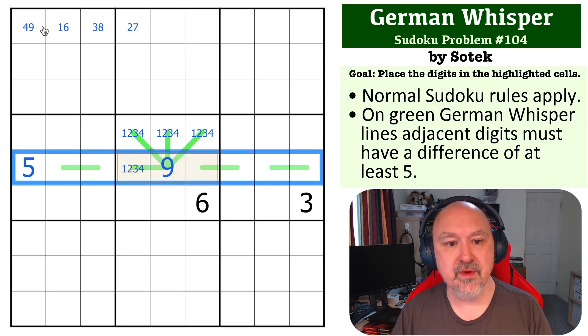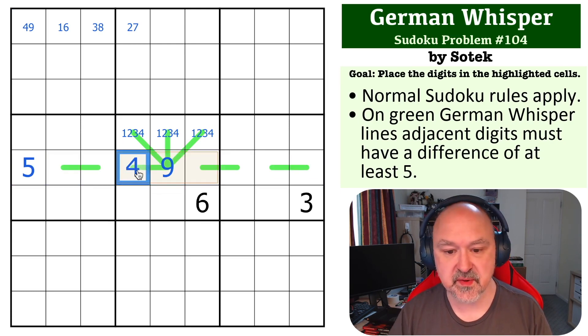But in this row I've already shown you that wherever the four goes in this row must be next to the nine on one of these pairs. So this becomes the four and we get these two digits.